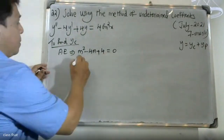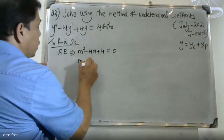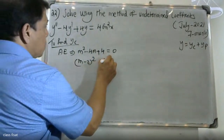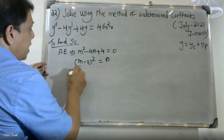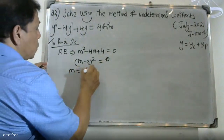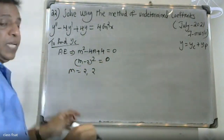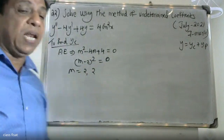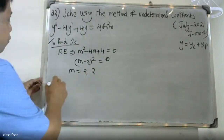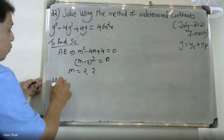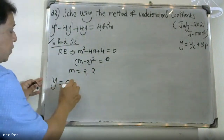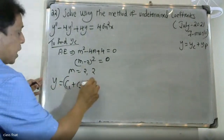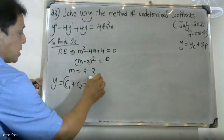(m - 2)² = 0, so the roots are repeating: m = 2, 2. Therefore yc = (c1 + c2·x)·e^(2x).